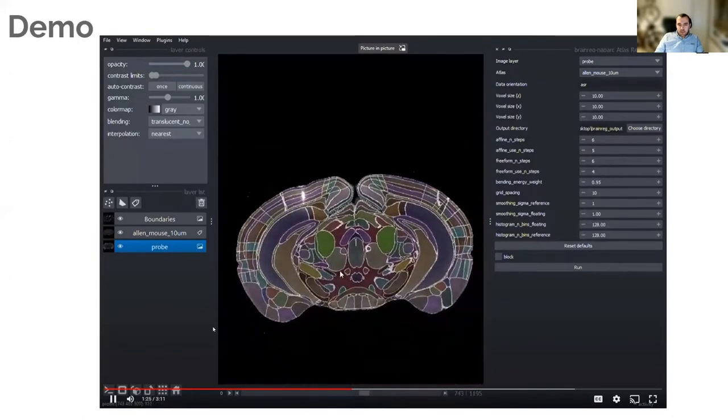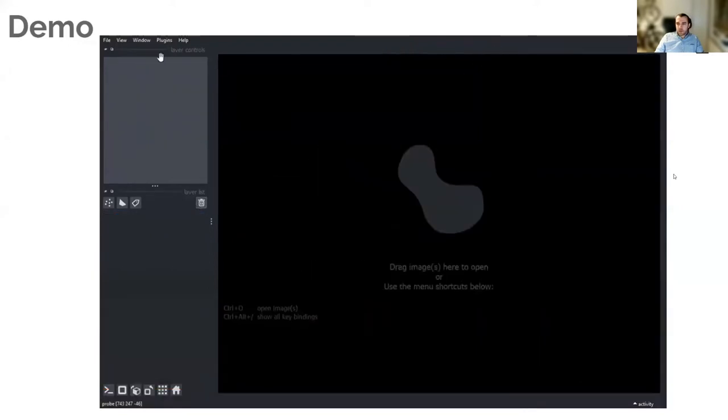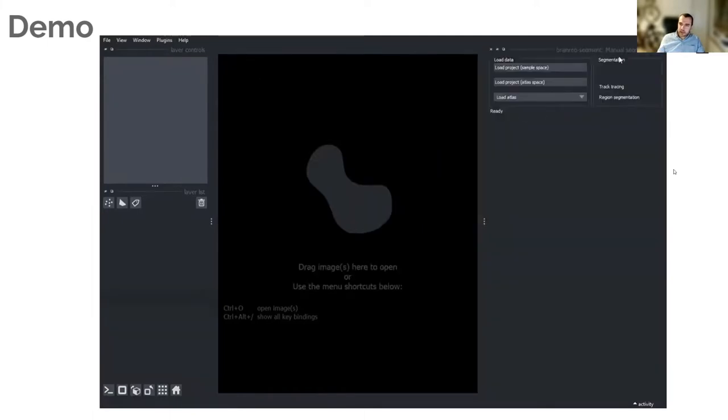For this, we use a different plugin. Just for this demo, we're going to delete all the data, close this plugin, and then open up the new plugin which is called BrainReg-segment, which basically just takes the output of the last step. So you load your output directory from the last step. You can do this analysis either in sample space or in atlas space. In this case, we're going to do it in atlas space.